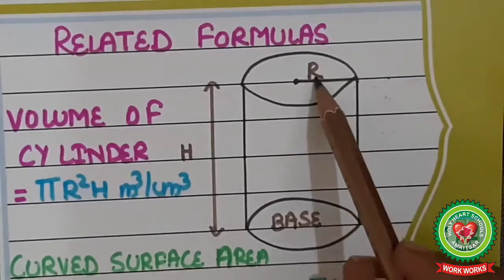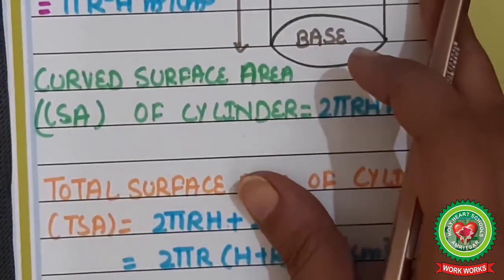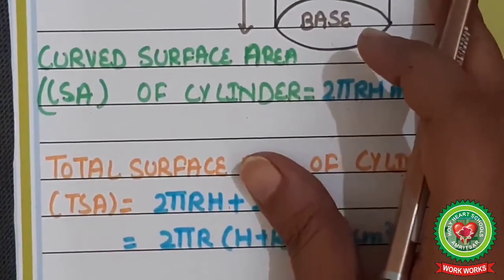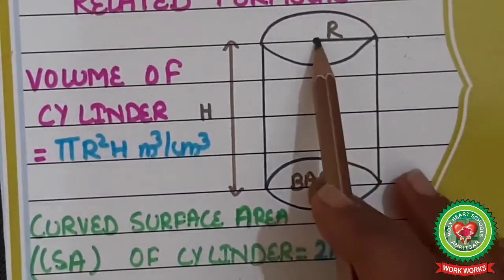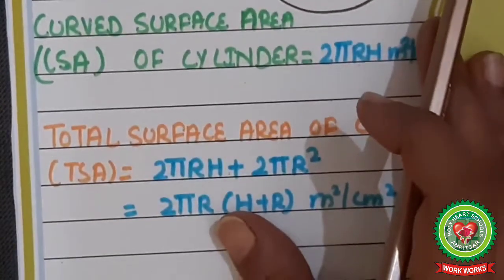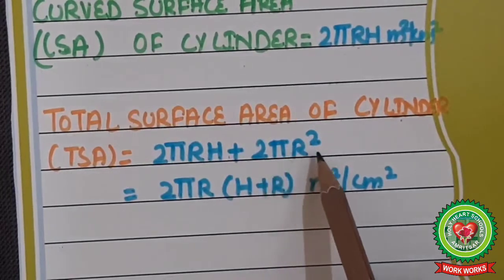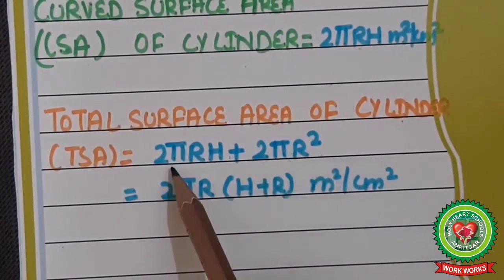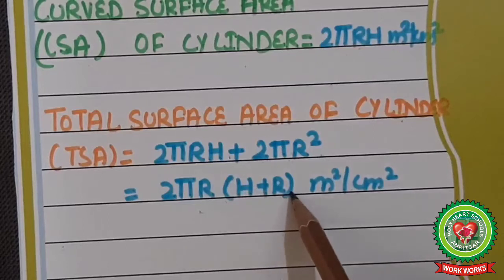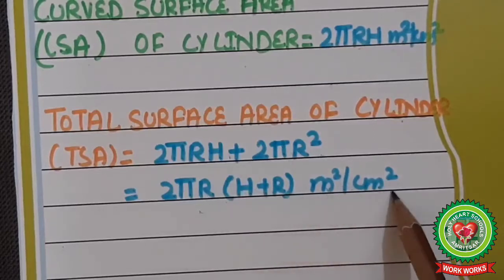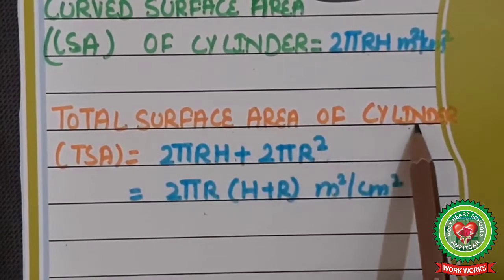Since there are two circles on the top and bottom of the cylinder, we add 2πr². Taking 2πr as a common factor, what remains in the bracket is h + r. So the formula for total surface area of a cylinder is 2πr(h + r), in units of m² or cm².